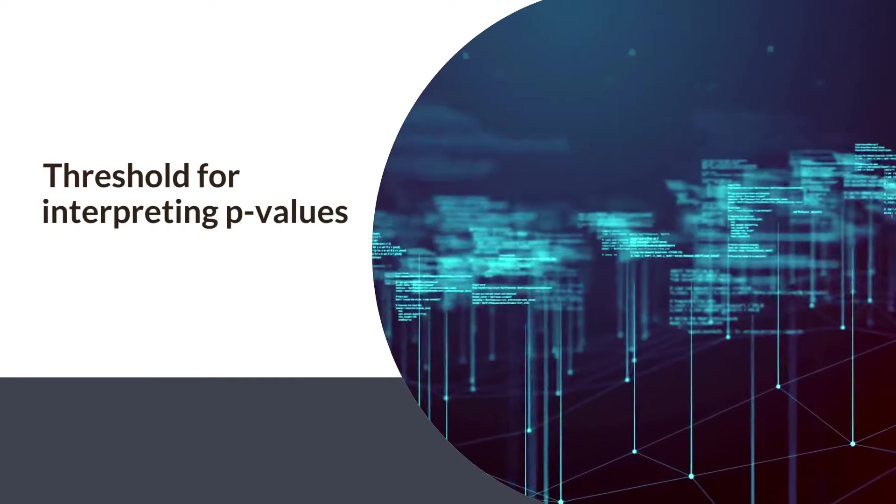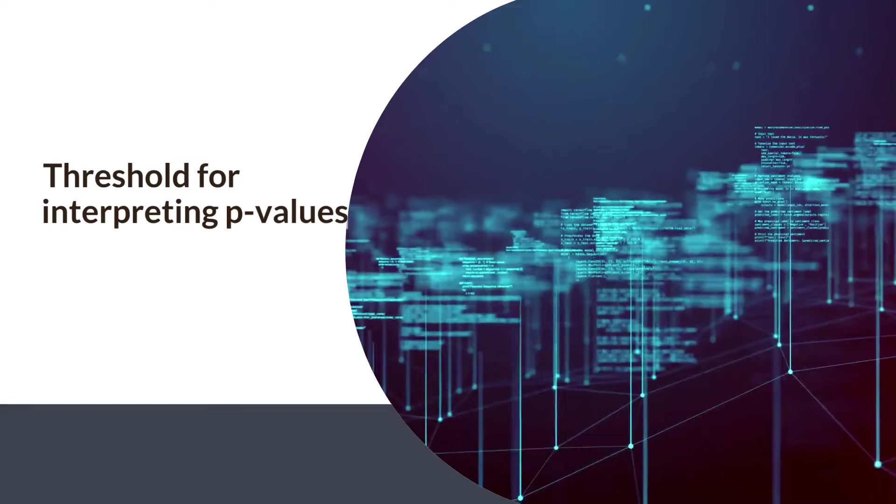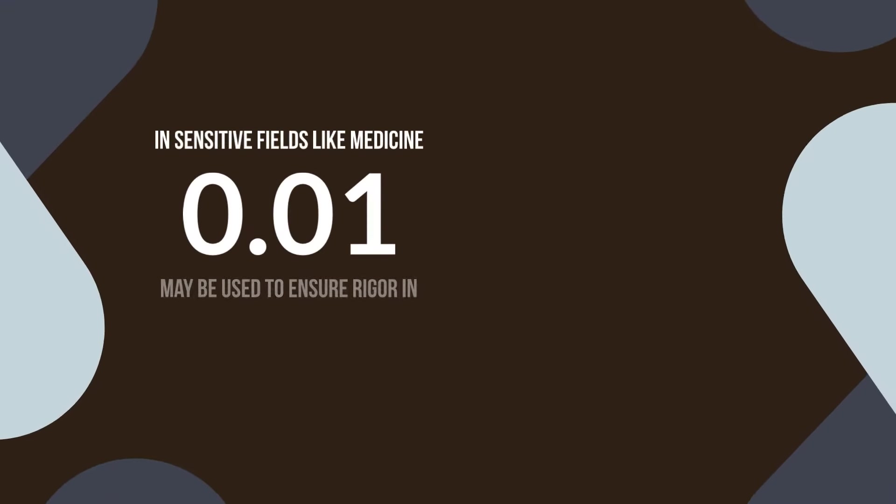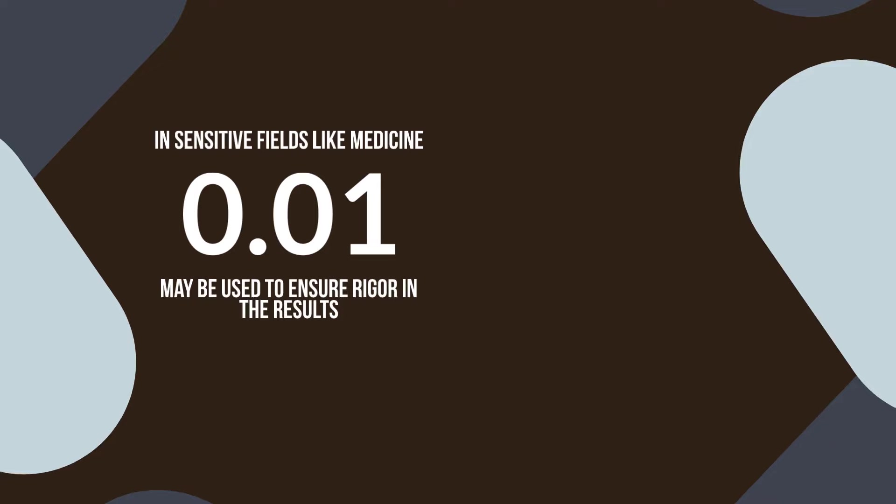The threshold for interpreting p-values, often set at 0.05, can vary depending on the field of study. In sensitive fields like medicine, a lower threshold, such as 0.01, may be used to ensure rigor in the results.